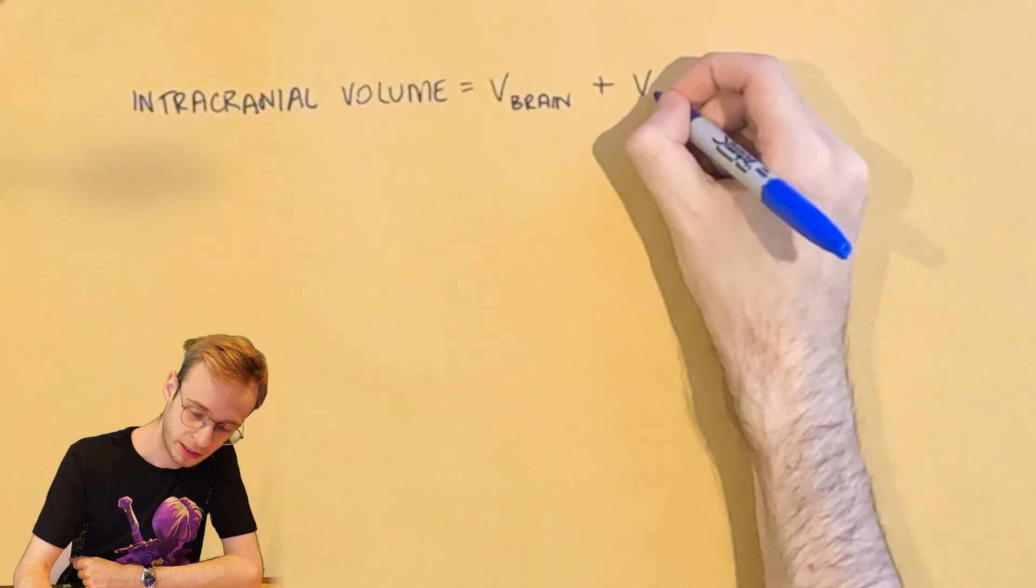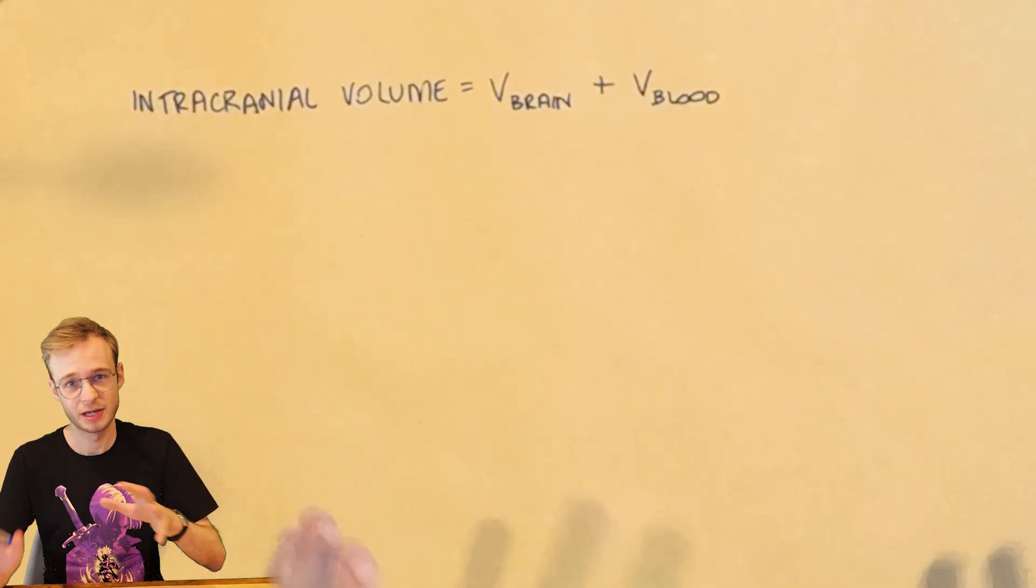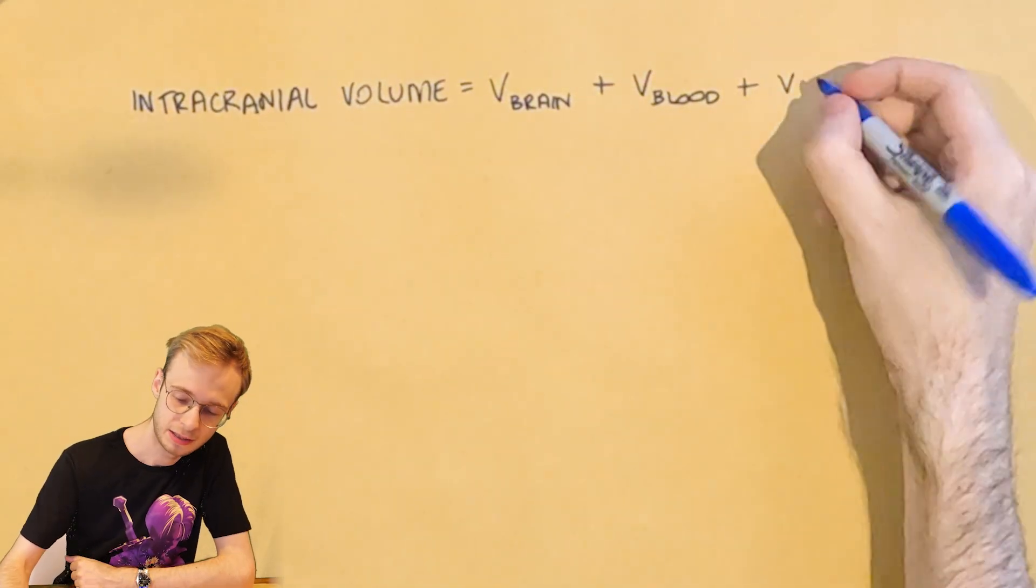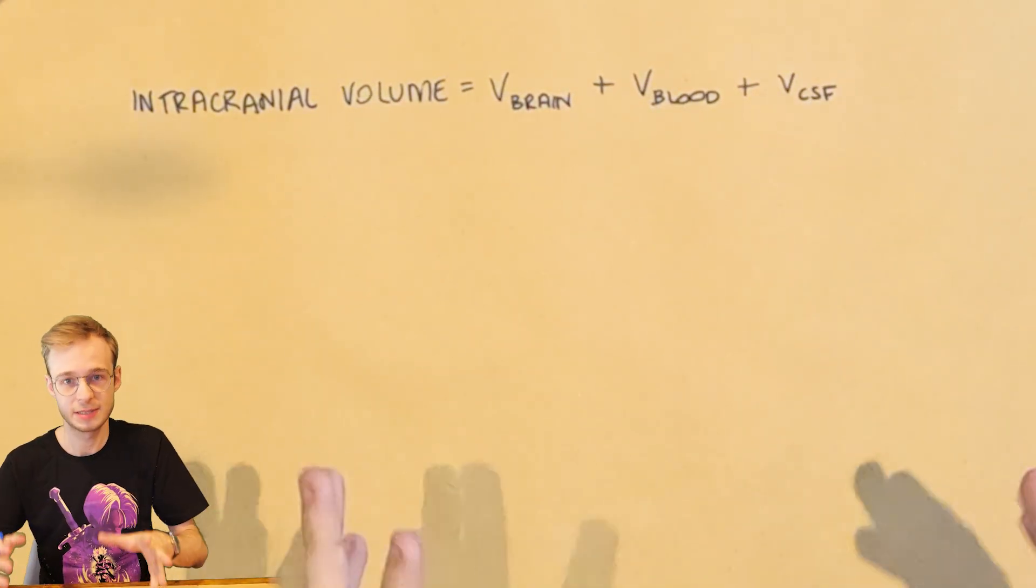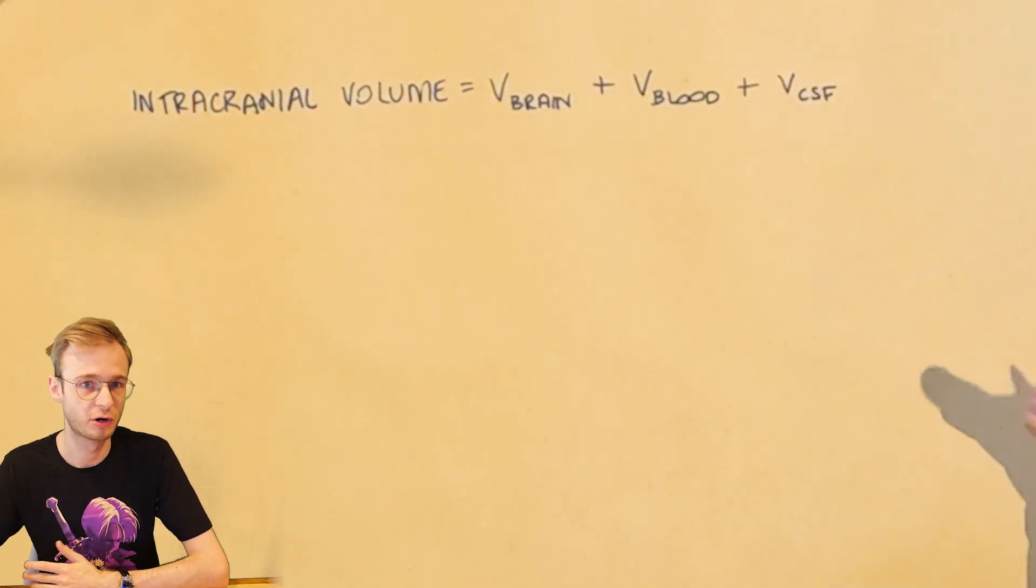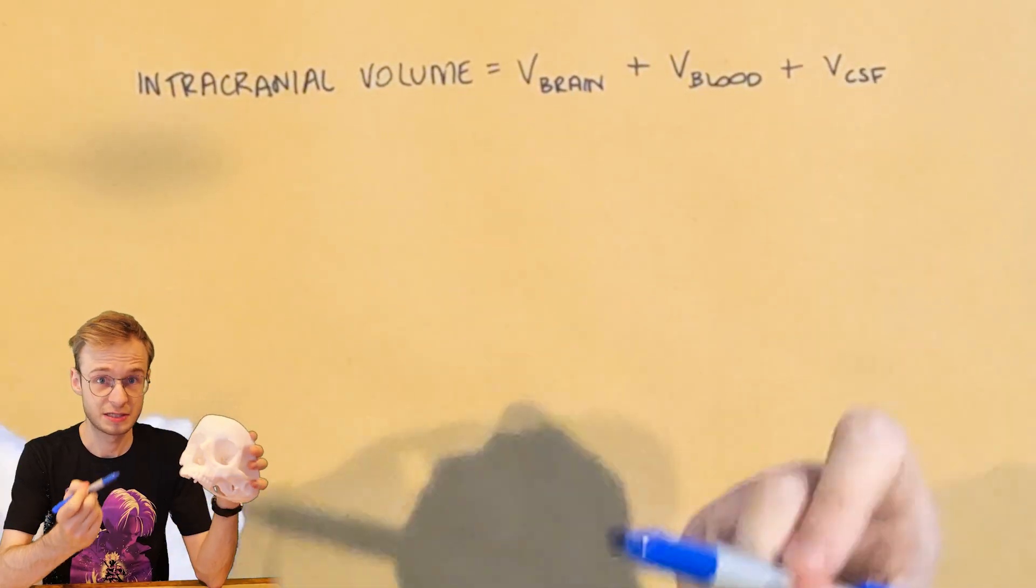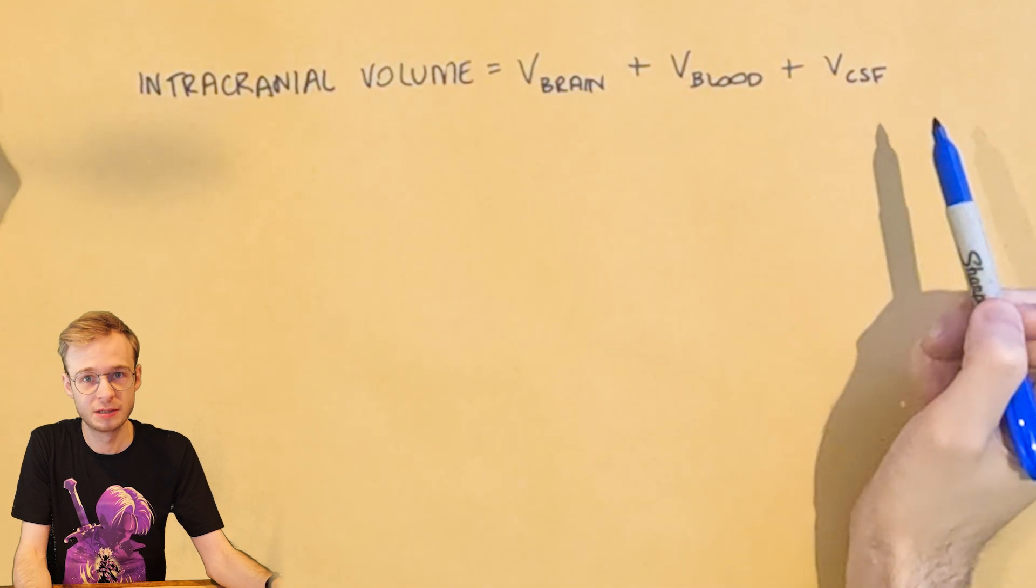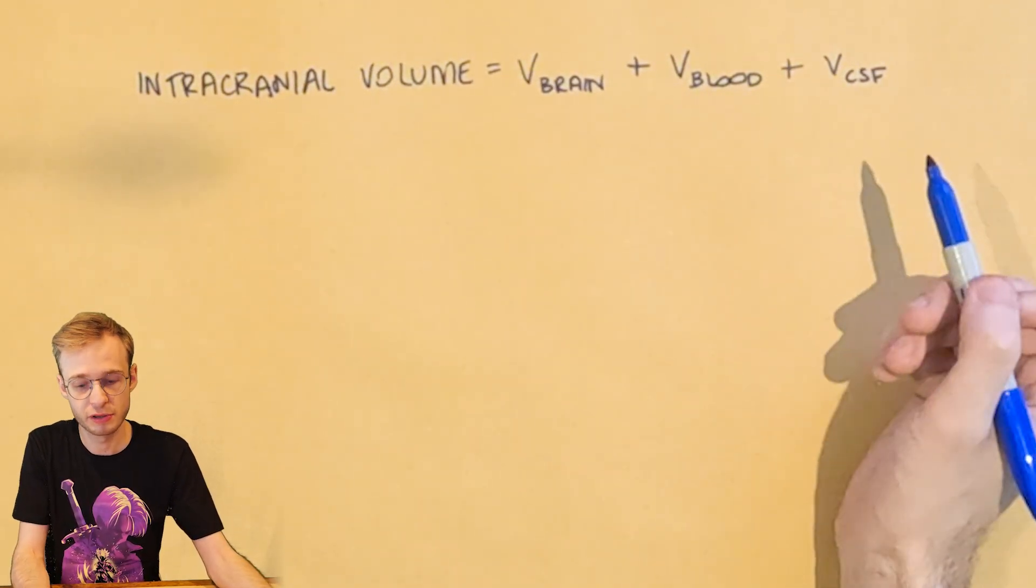You also have blood, both arterial and venous blood, that makes around 10 to 12%. And then the third main constituent, as you will know, is cerebrospinal fluid, CSF, that makes up the final approximately 10%. Now because the total volume inside the skull is fixed, as we just agreed, any increase in one of these three components must be offset by a decrease in one or both of the others.